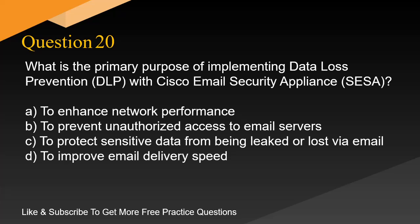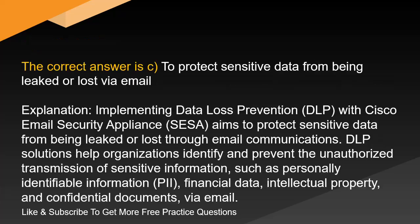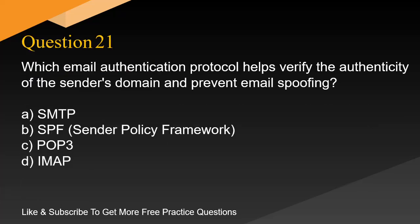Question 20. What is the primary purpose of implementing Data Loss Prevention (DLP) with Cisco Email Security Appliance (SESA)? A. To enhance network performance. B. To prevent unauthorized access to email servers. C. To protect sensitive data from being leaked or lost via email. D. To improve email delivery speed. The correct answer is C. To protect sensitive data from being leaked or lost via email. Implementing DLP with SESA aims to protect sensitive data from being leaked or lost through email communications. DLP solutions help organizations identify and prevent the unauthorized transmission of sensitive information such as PII, financial data, intellectual property, and confidential documents via email.